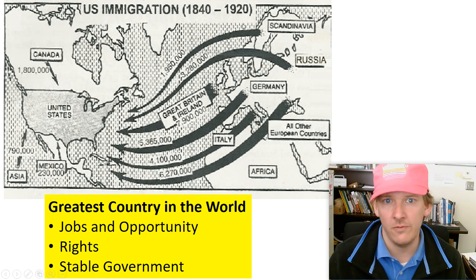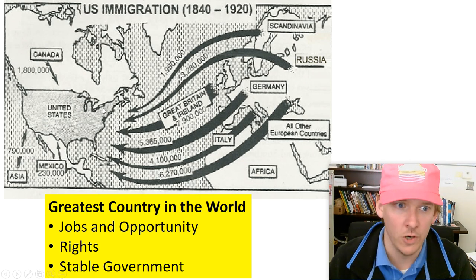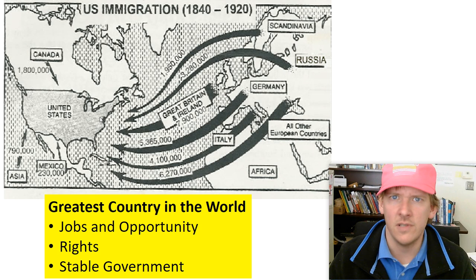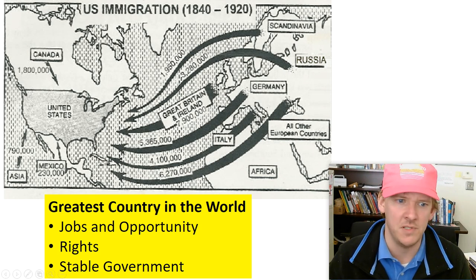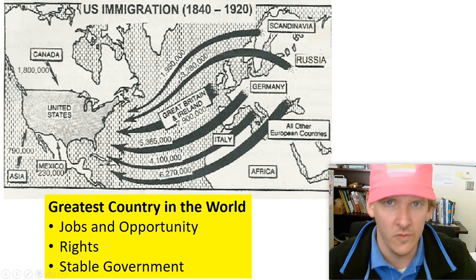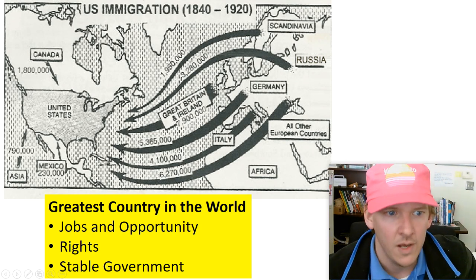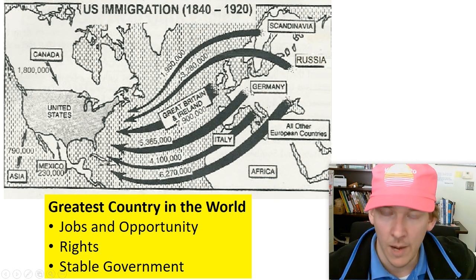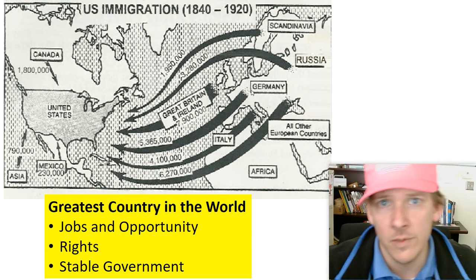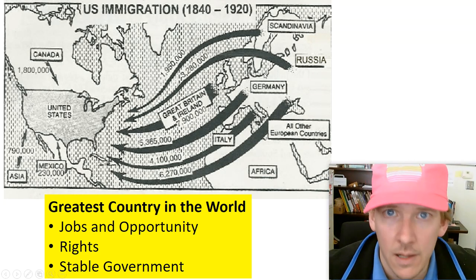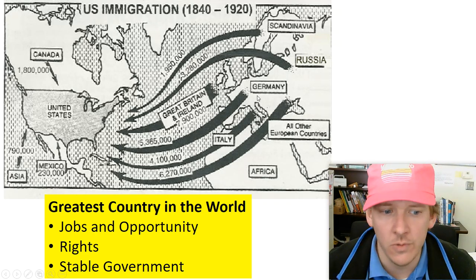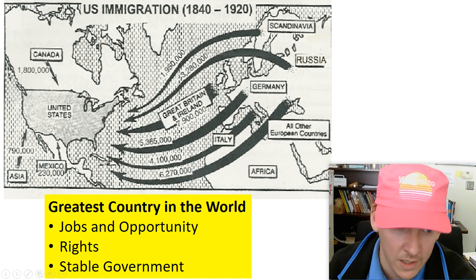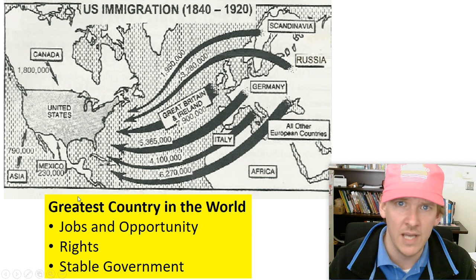Here is a map showing immigration from 1840 to 1920. You can see a lot of people moving out of Europe to the United States. Why were people leaving Europe? The same reason they're moving to America today: jobs, opportunity, rights, and stable government. During that time period, Europe had none of those things. Today Europe has jobs, opportunities, rights, and stable government, so you don't see immigration into America from Europe. We are seeing that from Latin America, because they don't have jobs, opportunities, and their rights are not being protected in their corrupt governments.